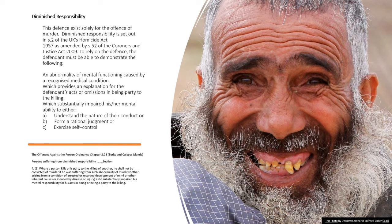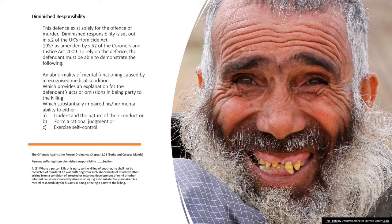In the Turks and Caicos Islands, the Offenses Against the Person Ordinance, Chapter 3.08, deals with the defense of diminished responsibility. Section 4, subsection 1 states: where a person kills or is party to the killing of another, he shall not be convicted of murder if he was suffering from such abnormality of the mind — whether arising from a condition of arrested or retarded development of the mind, or other inherent causes, or induced by disease or injury — as to substantially impair his mental responsibility for his acts in doing or being a party to the killing.